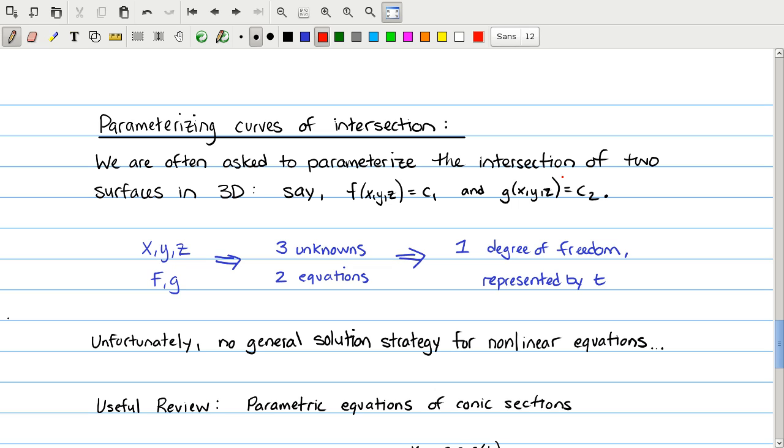For example, you might be given two surfaces in three dimensions, given, say, implicitly by such a function like f equals c1 and g equals c2. And these would be two implicit surfaces. And asked to find the curve of intersection. So we have three variables, x, y, and z. We have two equations between them. That's three unknowns with two equations. That leaves us with one degree of freedom, which is represented by this parameter t.